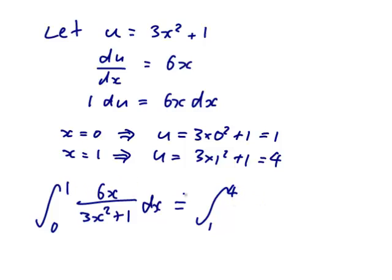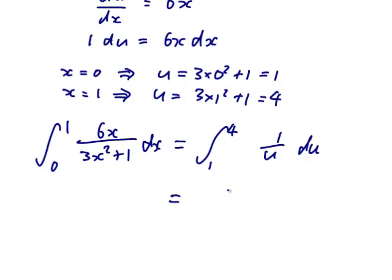The 6x dx became a 1 du. And the 3x squared plus 1 became a u. And the integral of that is ln u from 1 to 4.